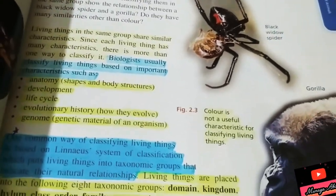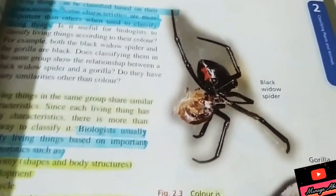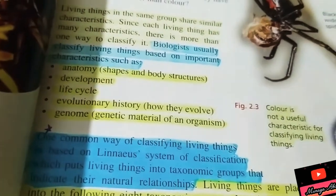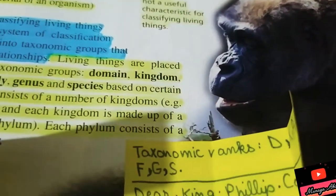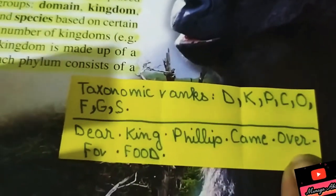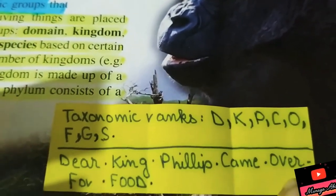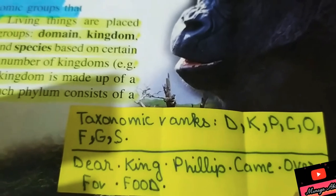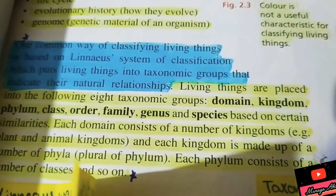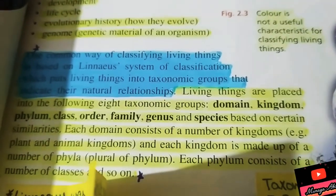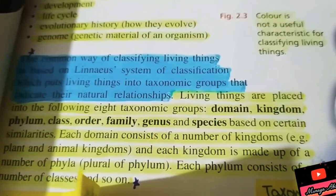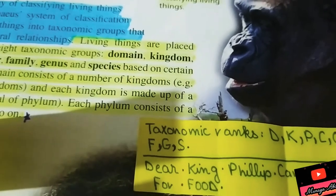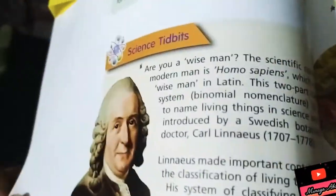Why is color not used for classifying living things? Because a black widow spider and a gorilla share the same color but are totally different in the five classification properties. Here is a mnemonic: living things are classified into eight taxonomic groups — Domain, Kingdom, Phylum, Class, Order, Family, Genus, and Species. Remember them by: 'Dear King Philip Came Over For Good Soup'.